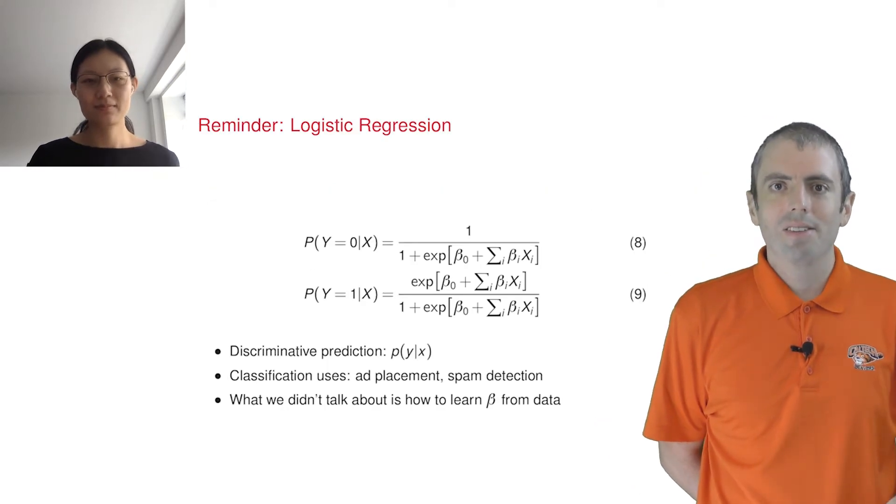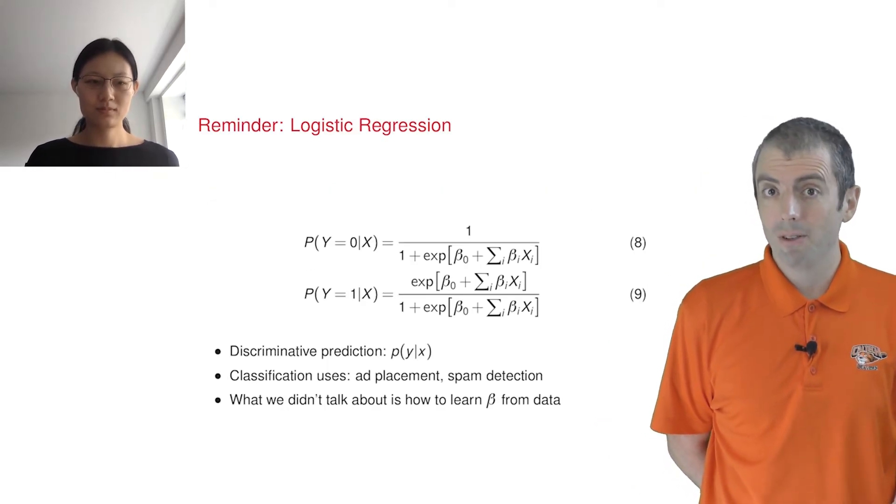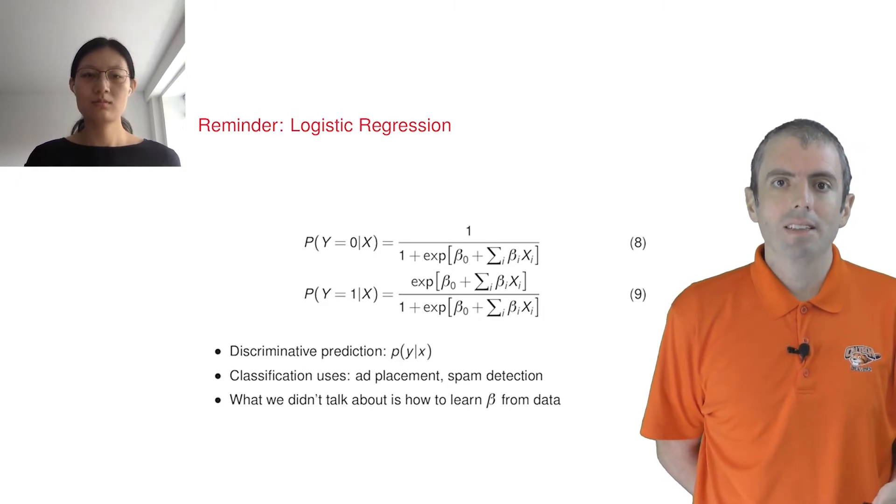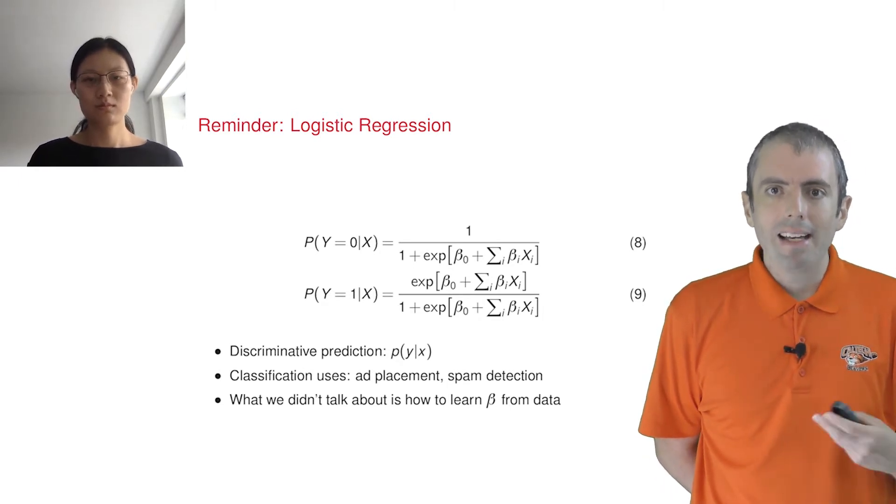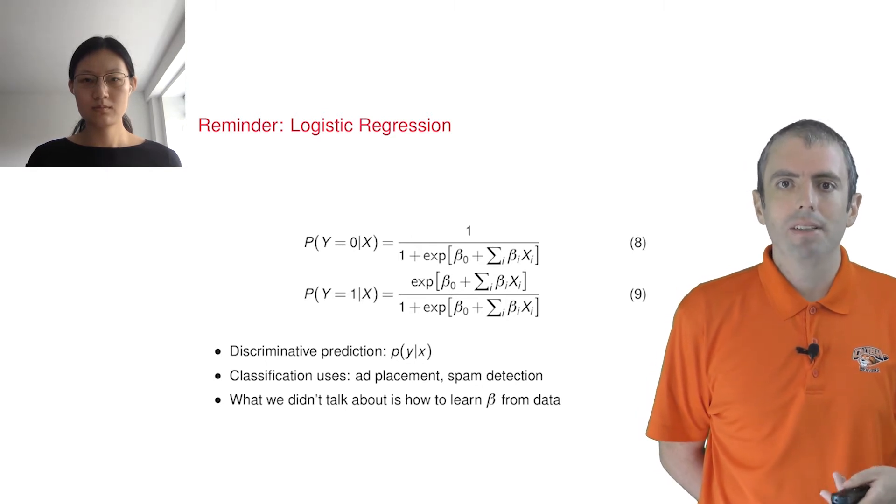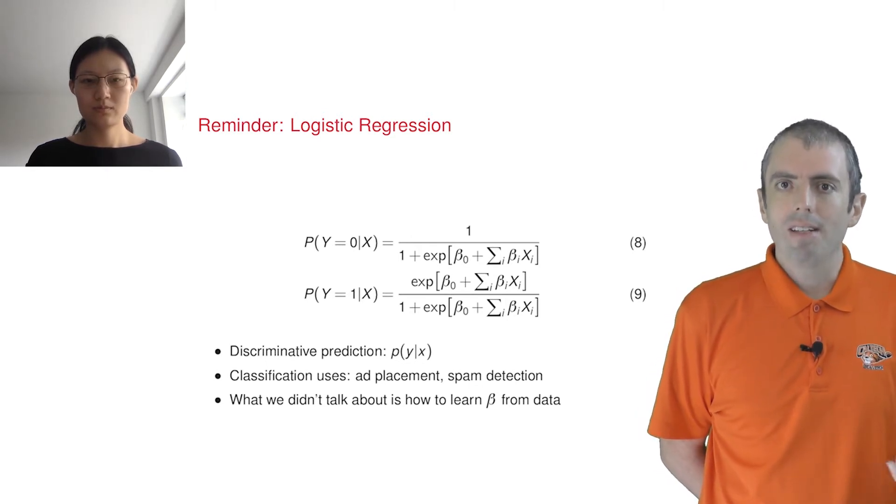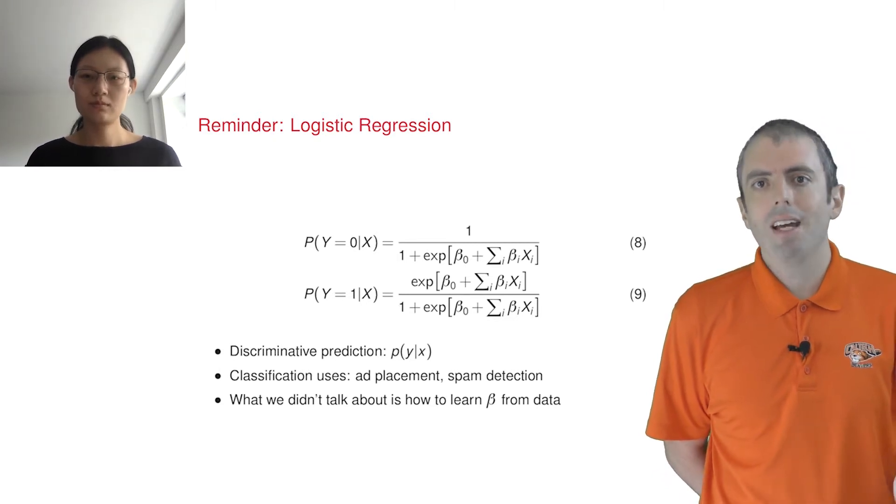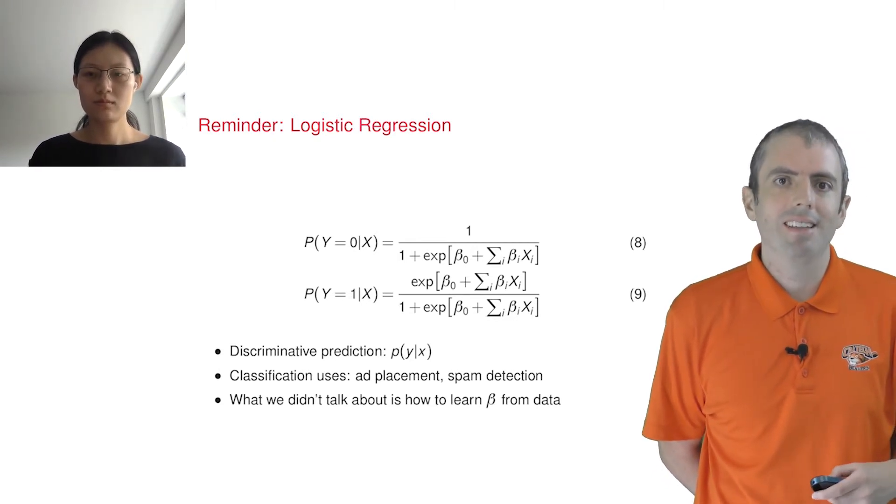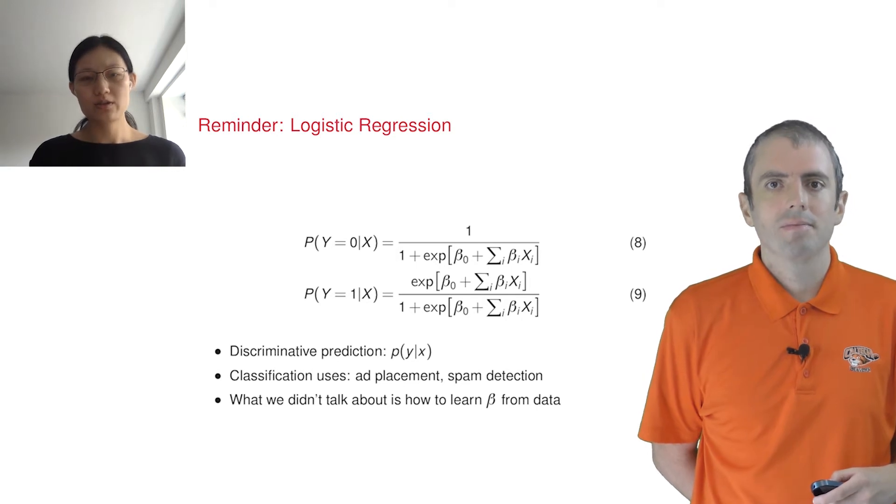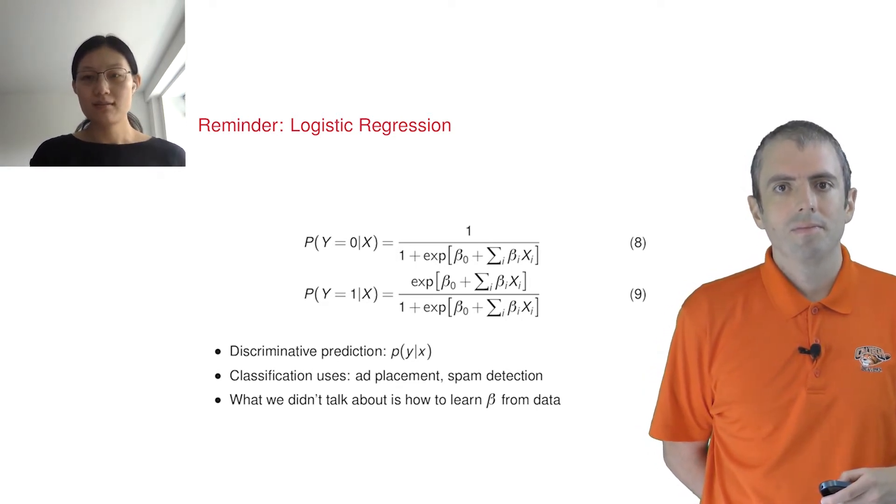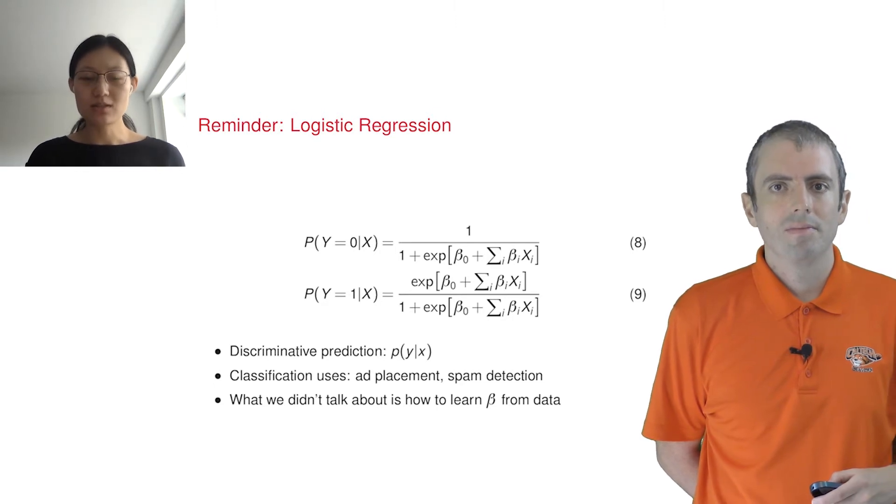This slide shows us how to make a prediction for logistic regression. Take the dot product of the weight vector and an example, pass it through a logistic function. That gives us the probability of a label given our data, and it's used for lots of different applications - spam detection, ad placement, things like that. It's a general purpose ML tool, but to get the weight vector beta, we need to talk about the objective function.